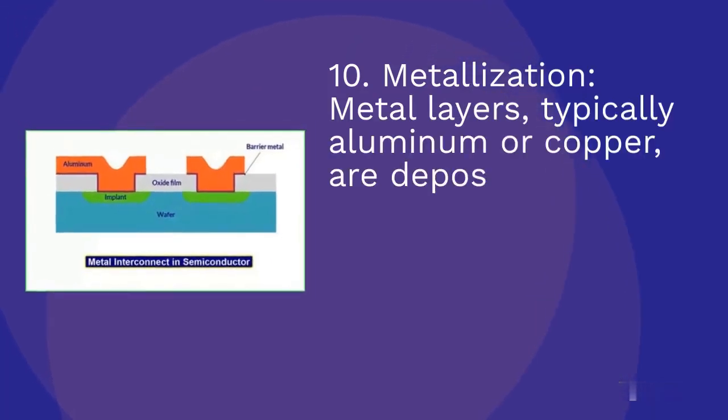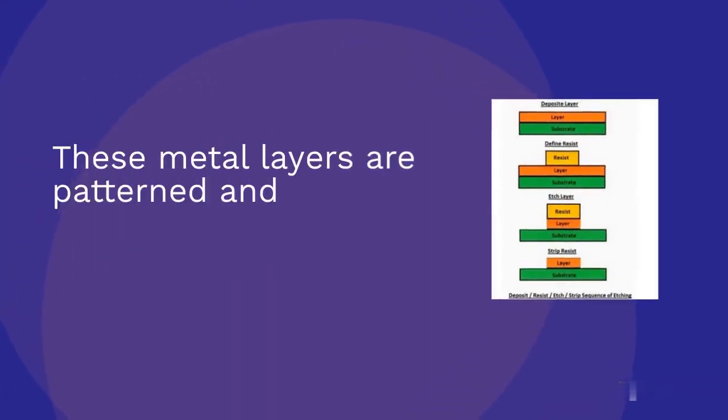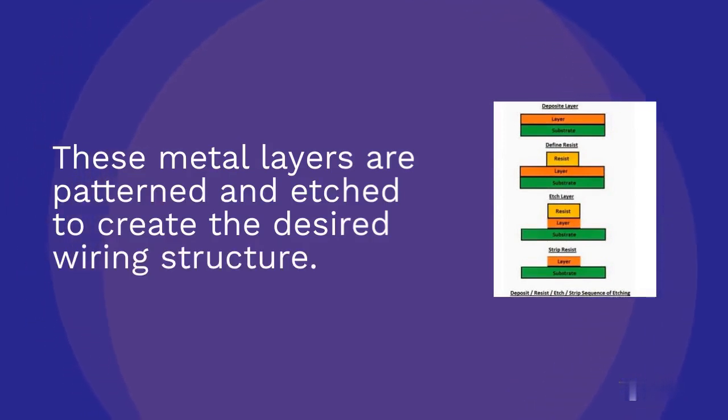Metallization: In addition, metal layers, typically aluminum or copper, are deposited onto the wafer's surface to form interconnections between different surfaces. These metal layers are patterned and etched to create the desired wiring structure.